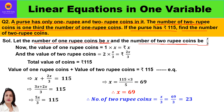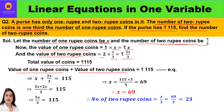Since one-third means x by 3, the value of 1 rupee coins will be 1 into x, which is x. The value of 2 rupee coins will be 2 into x by 3, which is 2x by 3 rupees. The total value of coins is 115, so value of 1 rupee coins plus value of 2 rupee coins equals 115.